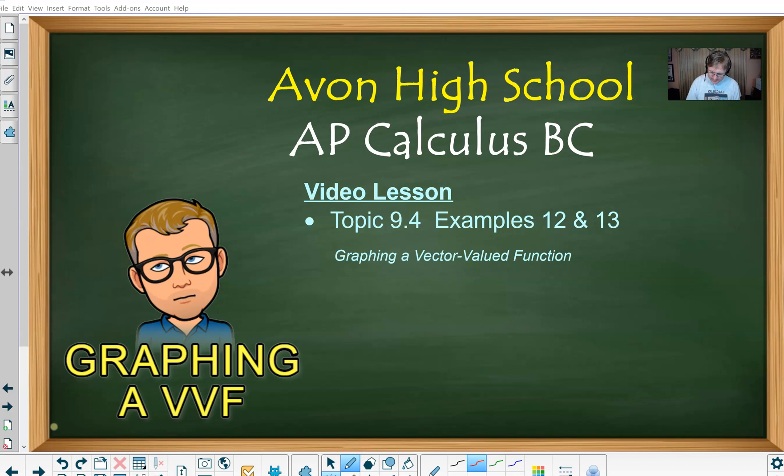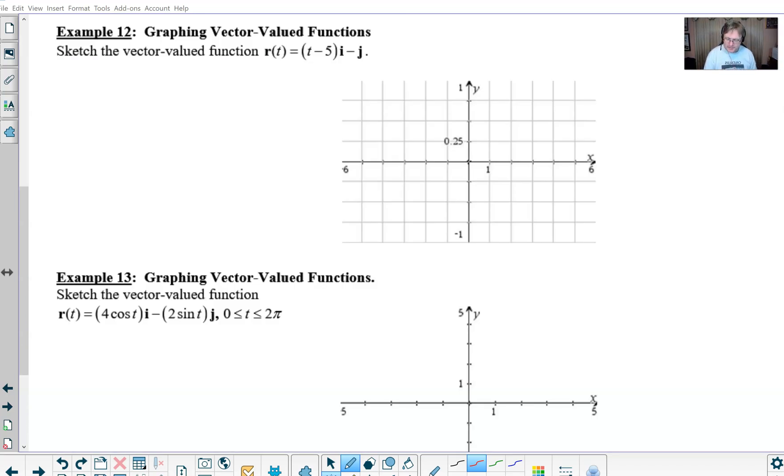Here is our example 12: sketch the vector valued function r(t) = (t-5)i - j. The thing that you might want to consider here is you could set up your little table of values, a lot of times we call this a t chart. Then we could put t, x, and y as our headings.